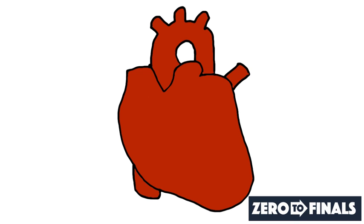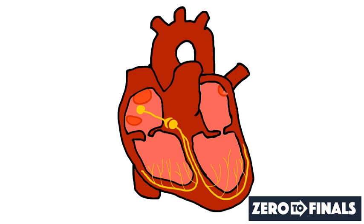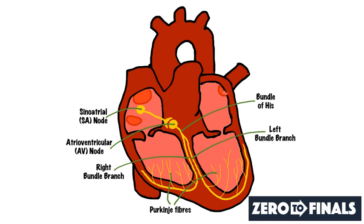I'm going to start by having a look at this diagram. This is the outside of a heart. If we strip away the top layer, we can look at the electrical activity inside. This is the sinoatrial node. The electrical activity starts here, passes down to the atrioventricular node, through the bundle of His, left bundle branch, right bundle branch, into the Purkinje fibers, where it stimulates ventricular contraction of the heart.